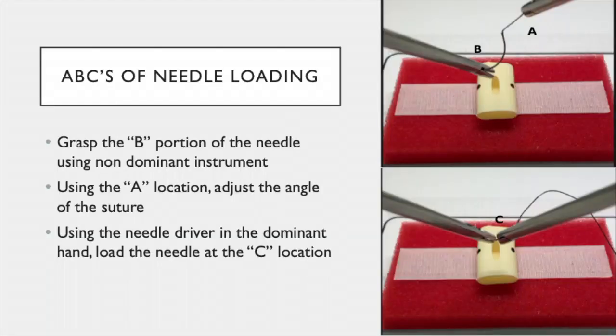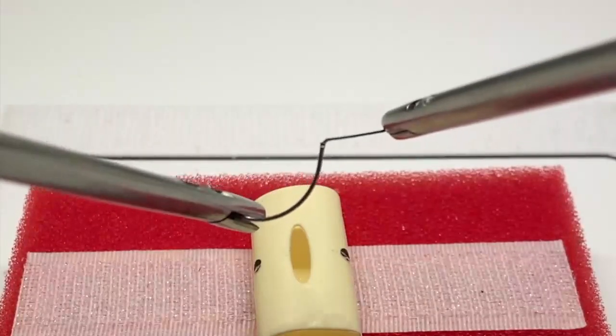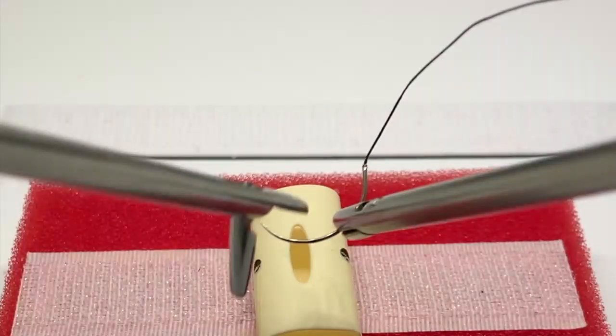To load the needle, grasp the needle at the B location. Using the dominant hand in the A location, adjust the angle of the suture. Using the needle driver in the dominant hand, load the needle at the C location and perpendicular to the needle. The needle is introduced from the A location. The assistant hand grabs the B location, and the needle is adjusted by shifting A back and forth. The needle is then loaded at the C position.